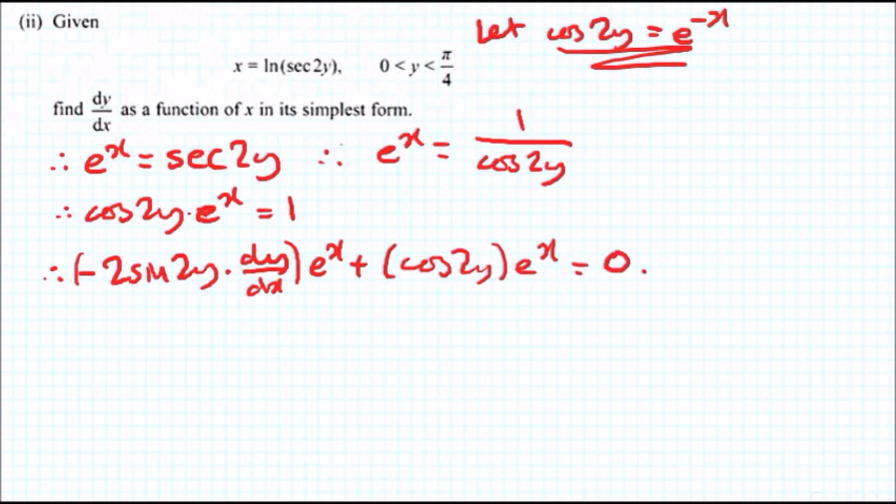So what do we do here now? Now we have our derivative. We can rewrite this in terms of dy over dx. And before that, we can cancel out any common terms. So let's cancel out e^x because that's gone. Next thing we want to do is plus 2 sine 2y dy/dx across and divide the whole term by 2 sine 2y.